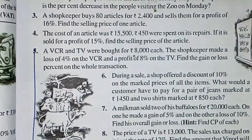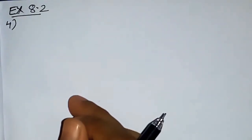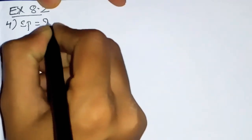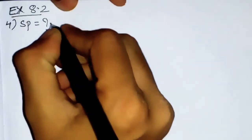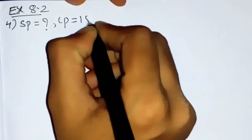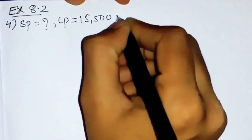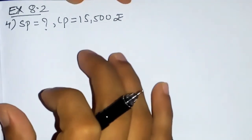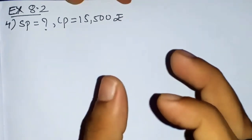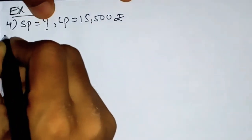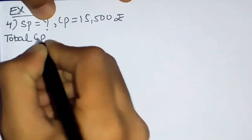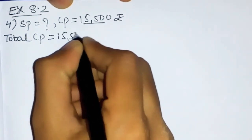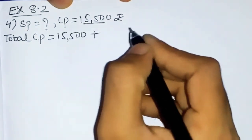Now let us see the solution of question number 4. According to the question, selling price is not given — that is what we have to find out. CP is given as ₹15,500. But along with CP, there is one additional expense — ₹450 spent on repair work — which we have to add. So first we will find the total CP.